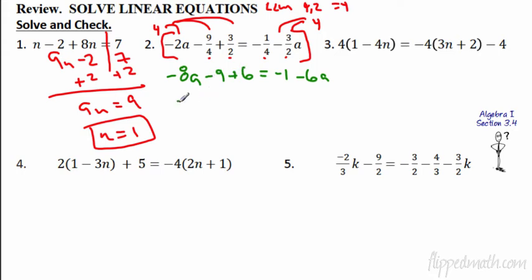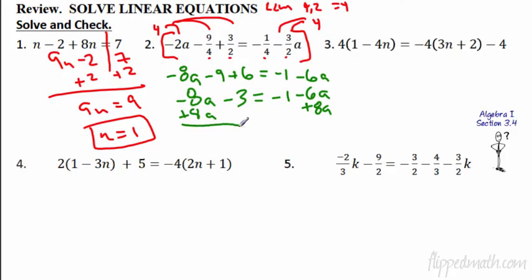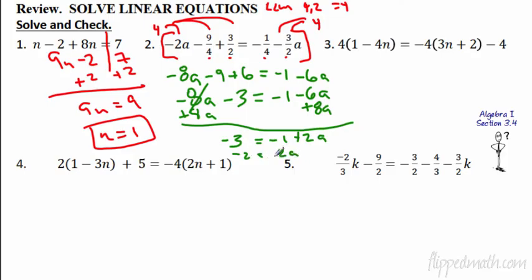Combining like terms: negative 8a minus 3 equals negative 1 minus 6a. Add 8a to each side — the 8a's cancel — giving negative 3 equals negative 1 plus 2a. Add 1 to each side: negative 2 equals 2a. Divide each side by 2, so negative 1 equals a.